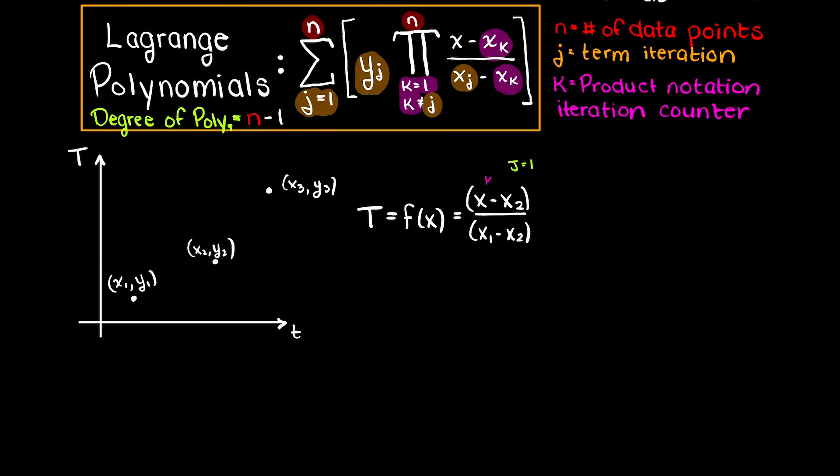So we begin with this term when k equals 2 as it cannot equal 1. So we have our input variable x minus x2 over xj, which is x1 in this case, minus xk, which is x2.